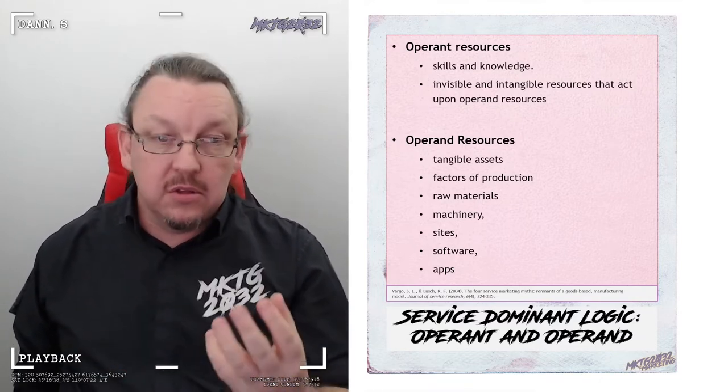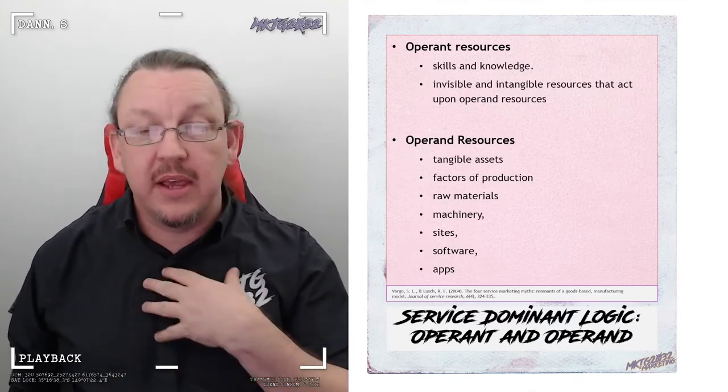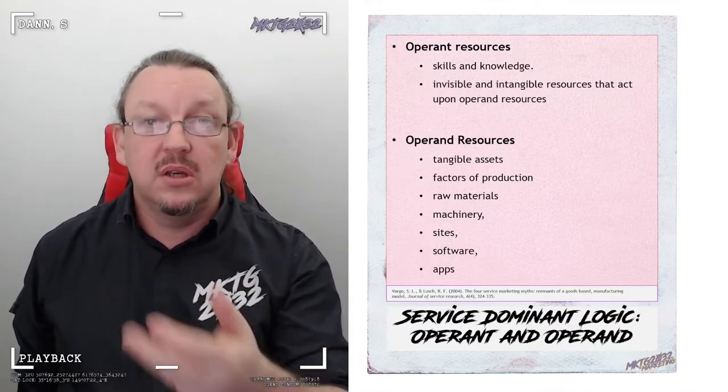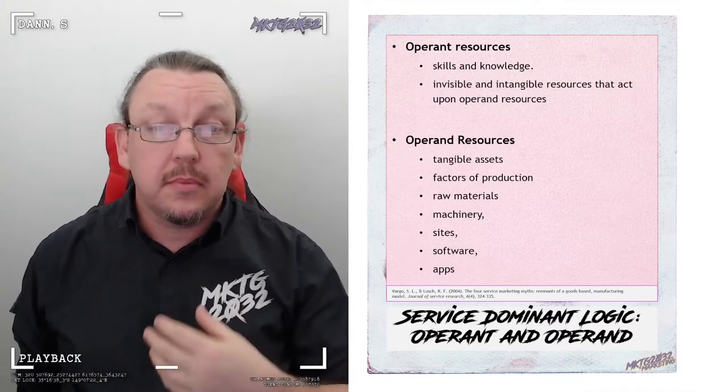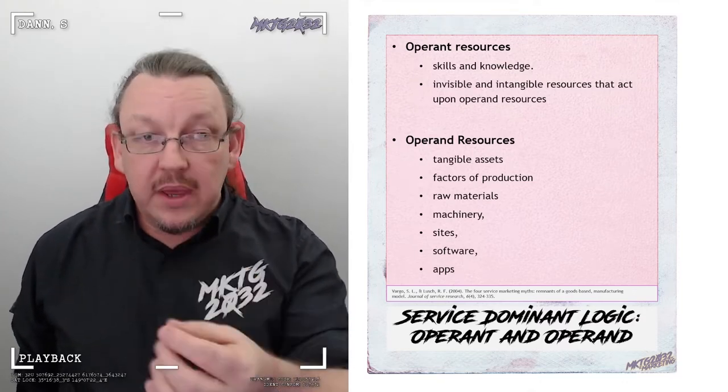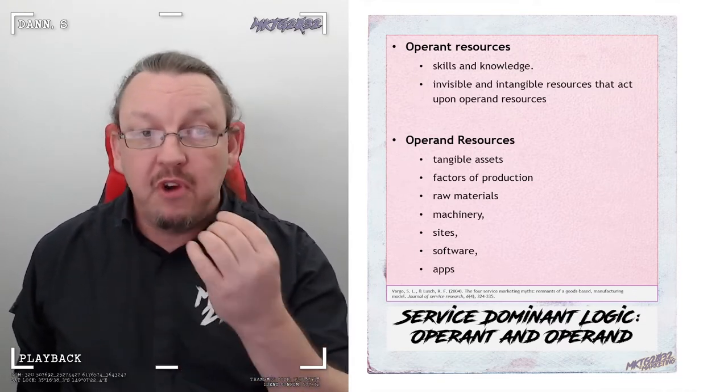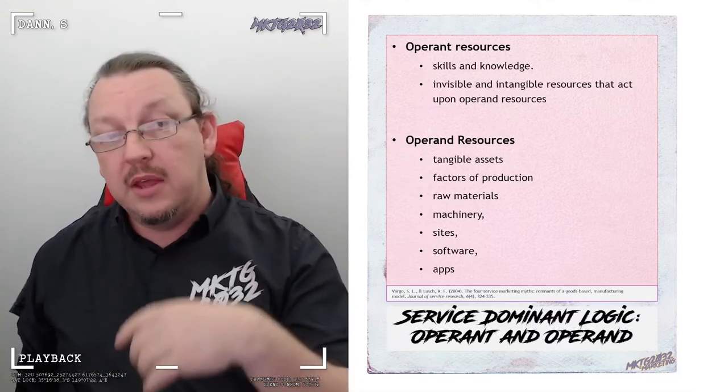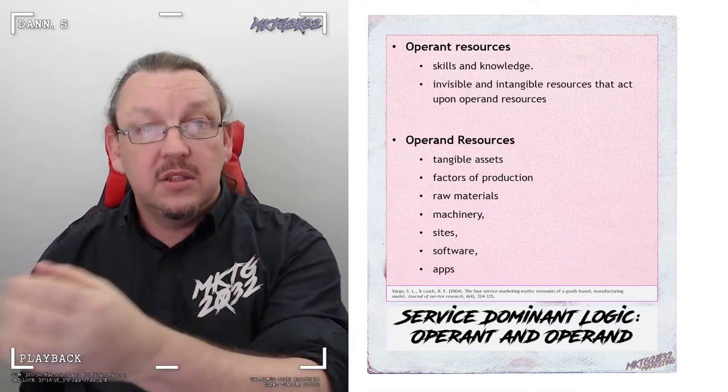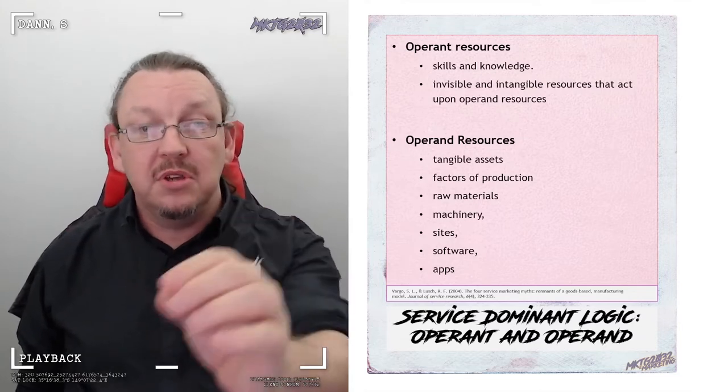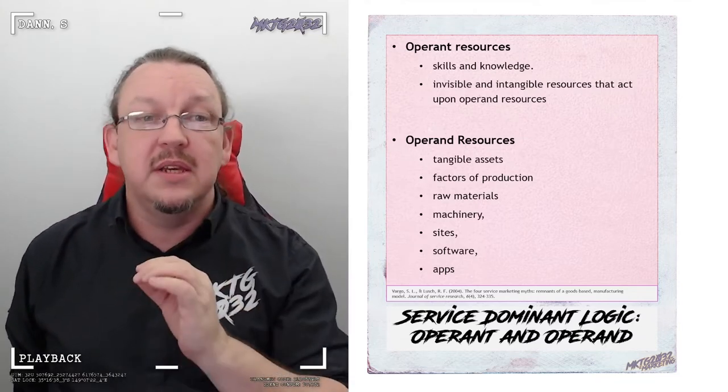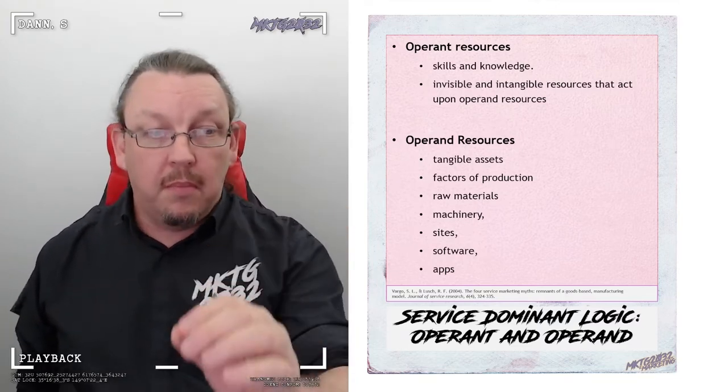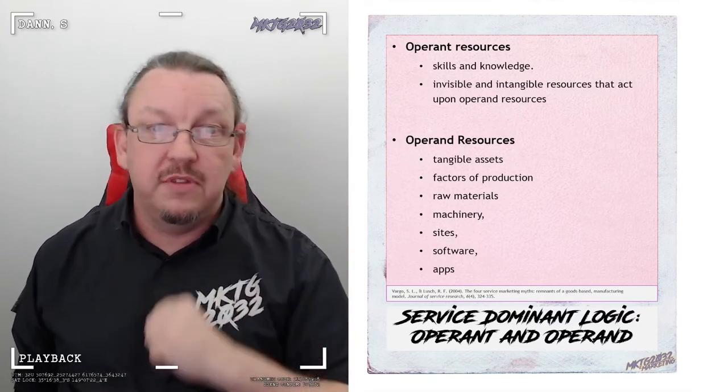They are the resources that you use to act on an operand resource. The operand resource, in our case as eMarketers, are site software content applications. Quick case in point is the operant resource is the skill set that you have as a student and the operand resource is this video. The way in which you take these ideas and you apply these ideas is the use of your operant resources on my operand resources of this content.